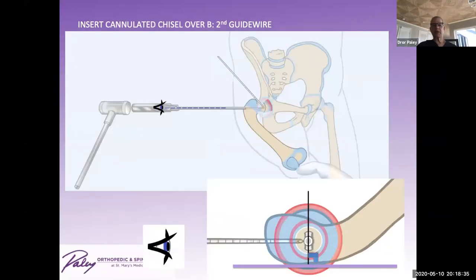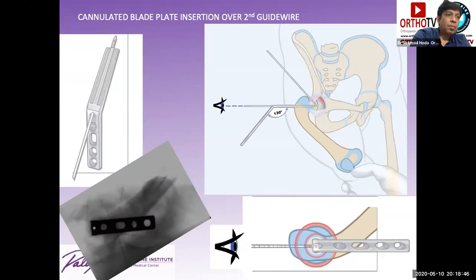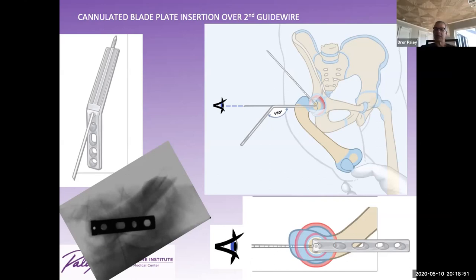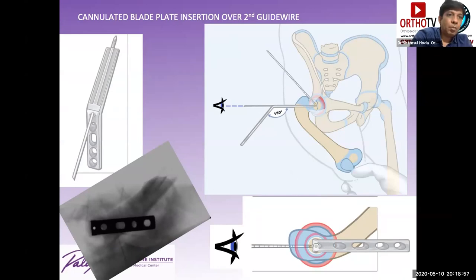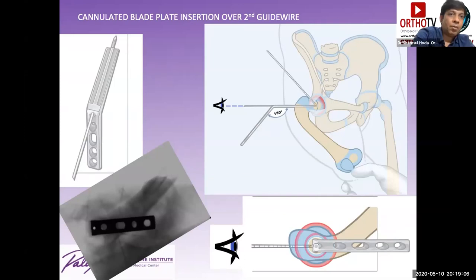Resuming: we replace the cannulated chisel with the cannulated blade plate. If you don't have this equipment, I will speak with my contacts — Vivek, or Pitkar Ortho Tools — to get it made available, because this instrumentation is really important. Insert the blade and remove the other guide wires.